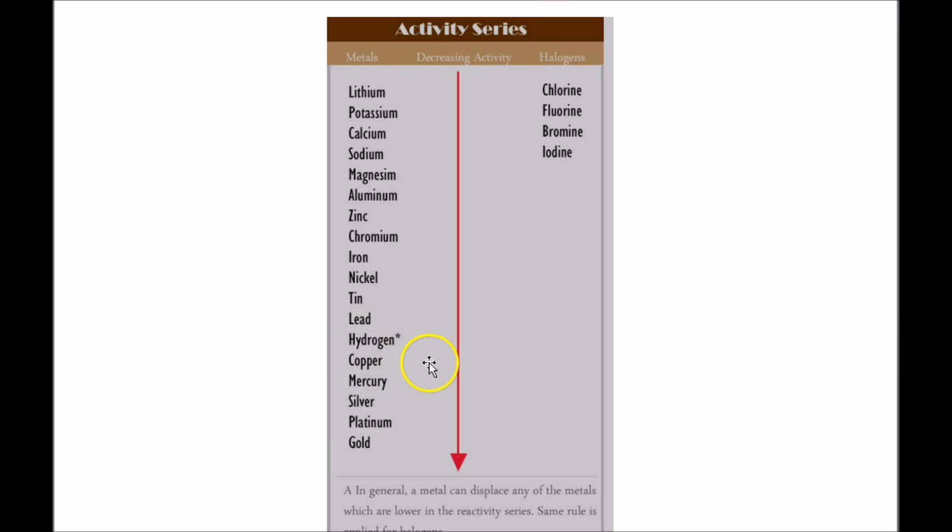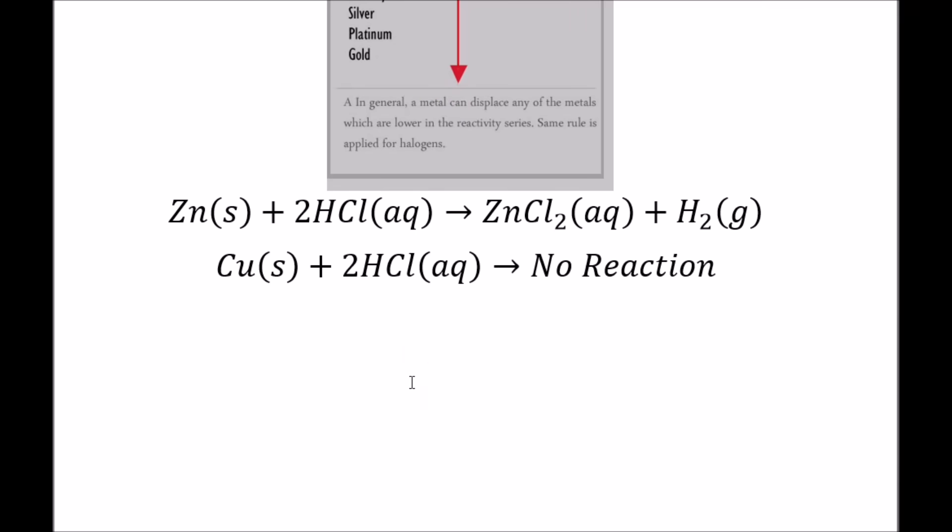So here, of the two possible reactions that could take place, since zinc is more active than hydrogen, it replaces hydrogen in hydrogen chloride, creating zinc chloride and hydrogen gas. But copper cannot replace hydrogen because it is less active, so there is no reaction.